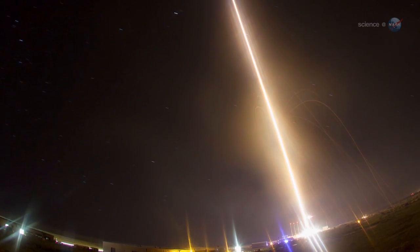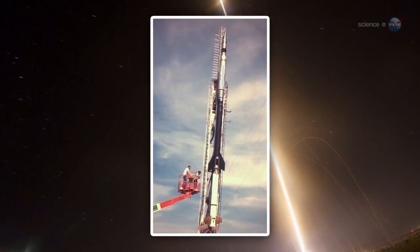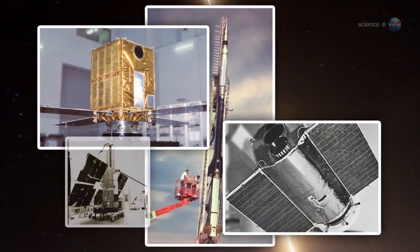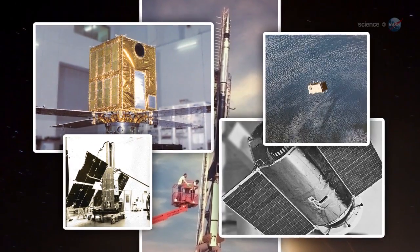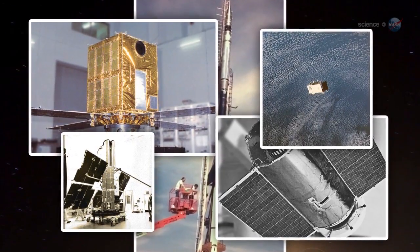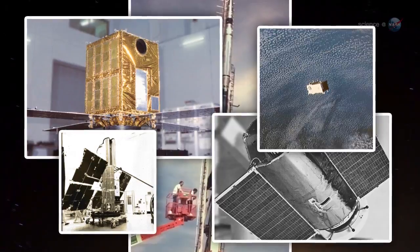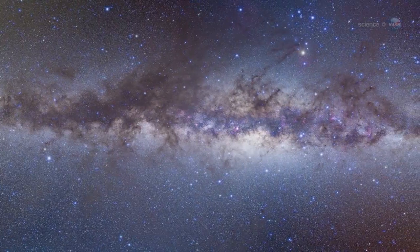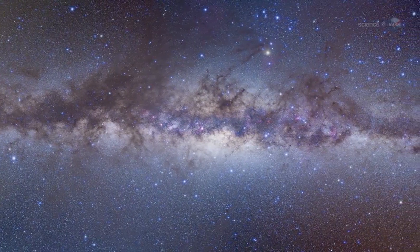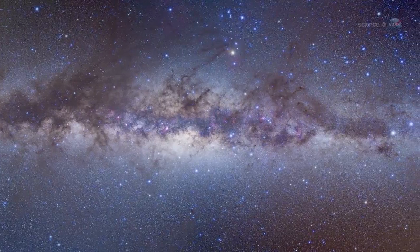Meanwhile, X-ray astronomers were getting their first look at the sky using sounding rockets and orbiting satellites, which revealed a million-degree X-ray glow coming from all directions. It all added up to Earth being inside a bubble of hot gas blown by exploding stars.